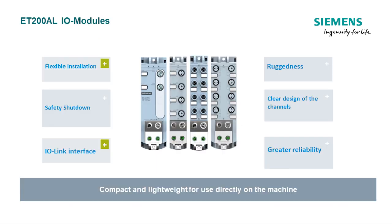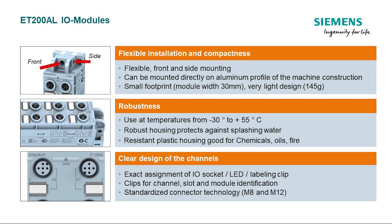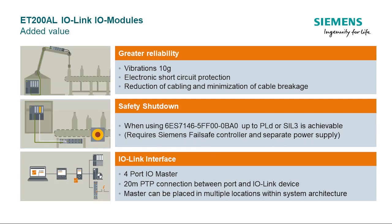Here are some notable features of the ET200AL products, which I will cover in greater detail in the next couple of slides. Flexible installation: with front and side mounting and a small footprint, it can be mounted even in limited spaces. Robustness: a broad temperature range and robust housing make it a good fit for applications with splashing water. Chemical resistance: the plastic housing works well in areas that experience chemicals, oils, and fire. Clear design of channels aids in wiring and troubleshooting. Standardized M8 and M12 connection technologies are used throughout the family.